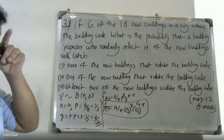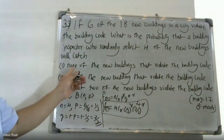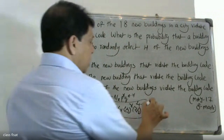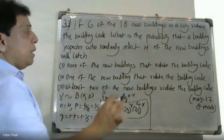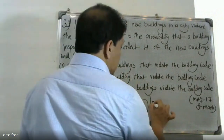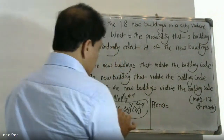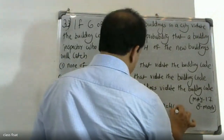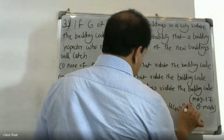For the first question, none of the new buildings violate the building code, meaning x is equal to 0. We substitute x equals 0 into the formula: 4C0 times (1/3) raised to 0 times (2/3) raised to (4 minus 0).